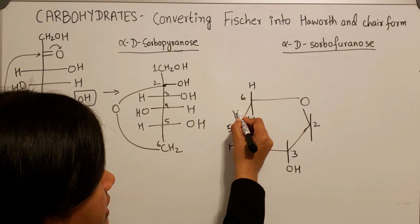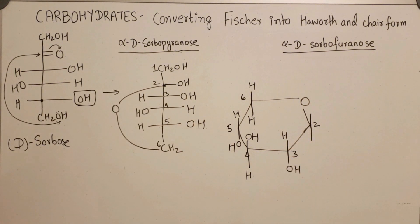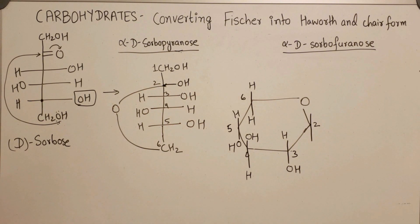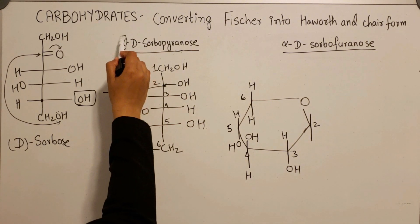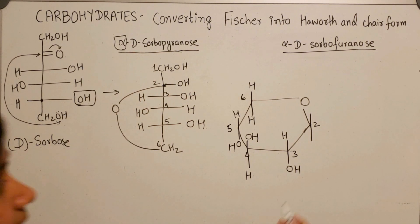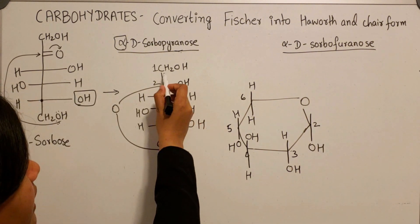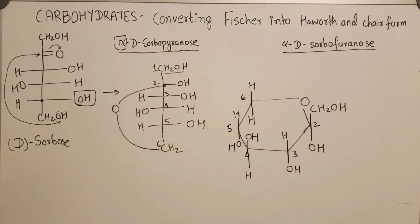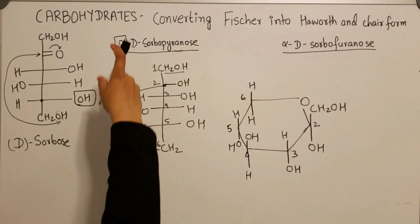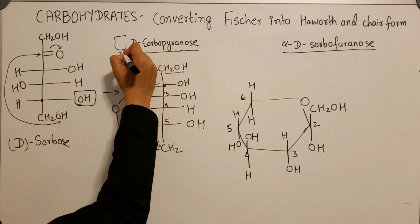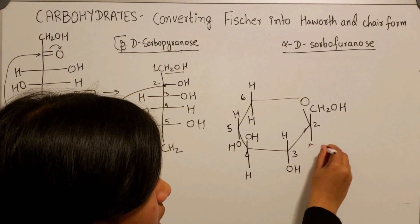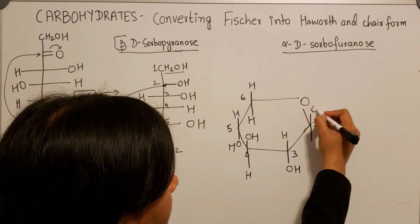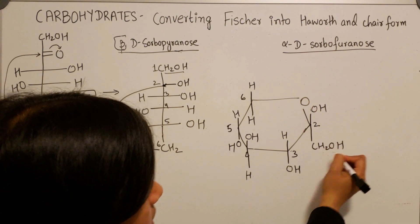Fill the rest of the substituents as hydrogens. The anomeric center has a hydroxyl group and a CH2OH group. The question asks for the alpha form, which means the hydroxy group is on the bottom and the CH2OH group goes on top. For beta-D-sorbopyranose, you just reverse these groups: the OH group goes on top and CH2OH goes on the bottom.